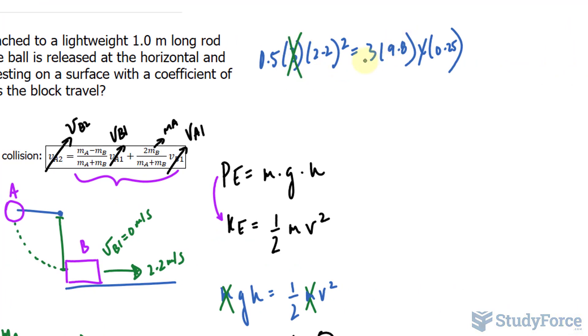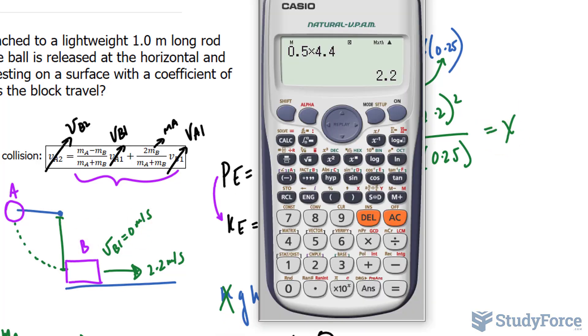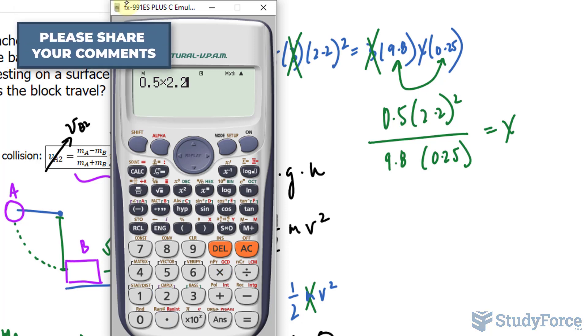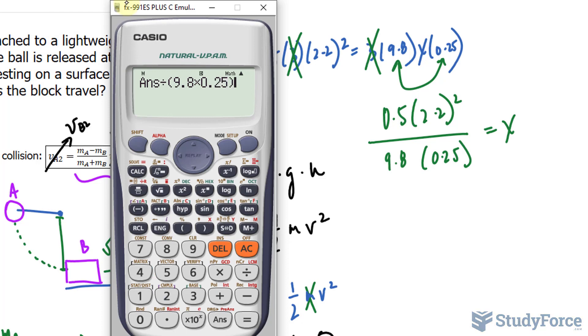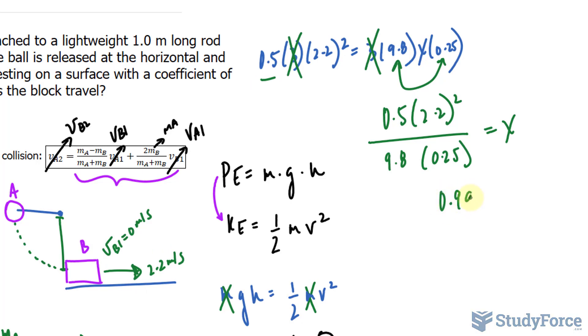The 3 and the 3 will cancel out, and we can multiply these two factors and then divide both sides by the product. 0.5 times 2.2 raised to the power of 2 over the product of those two gives us how far this block will move. So 0.5 times 2.2 raised to the power of 2 over 9.8 times 0.25, and that gives us a distance of 0.99 meters. You can just simply round to 1 if you like.